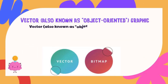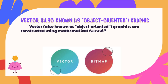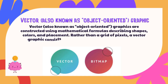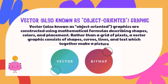Vector, also known as object-oriented, Graphics are constructed using mathematical formulas describing shapes, colors, and placement. Rather than a grid of pixels, a vector graphic consists of shapes, curves, lines, and text which together make a picture.